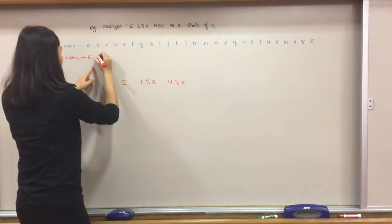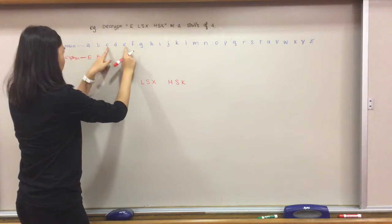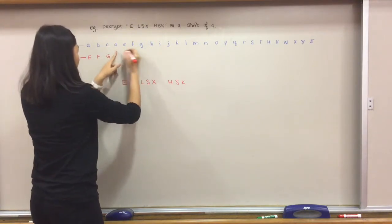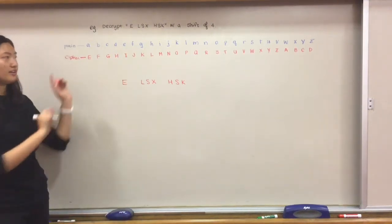And then b maps onto f, c, one, two, three, four goes to g, et cetera. Here it is. This is the table with a shift of four.